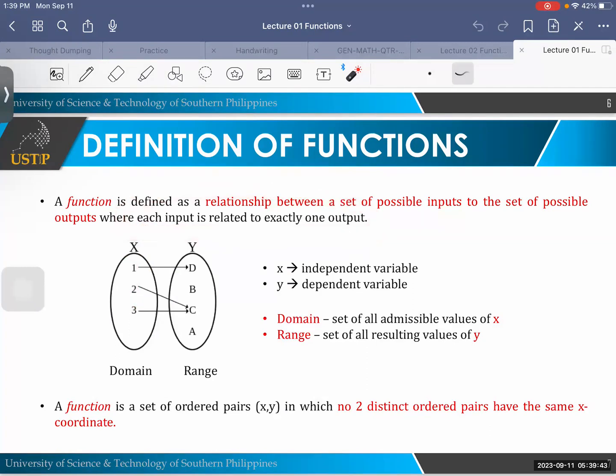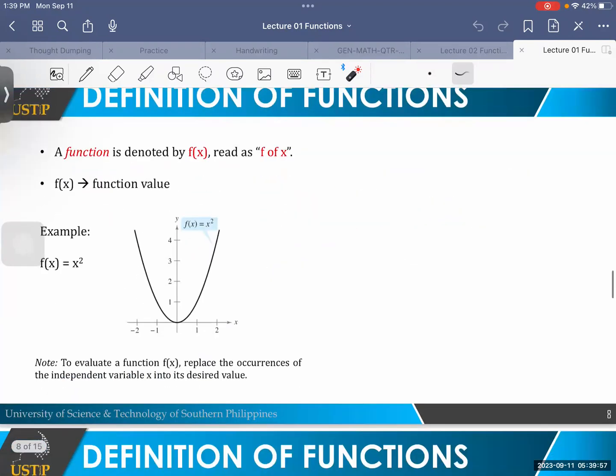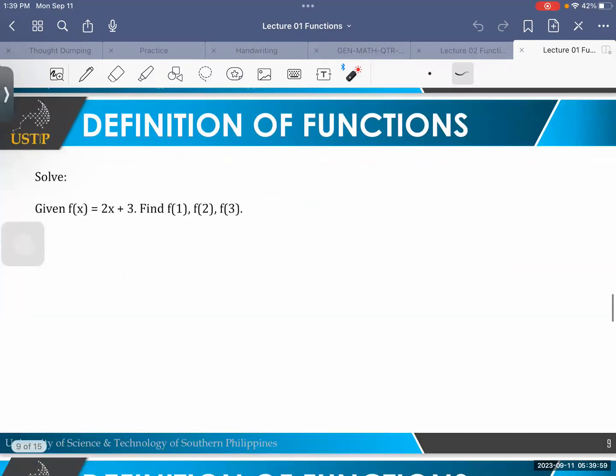Meaning each input corresponds to one output. There is no distinct ordered pairs that will have the same x coordinate, because otherwise that won't be a function anymore, right?